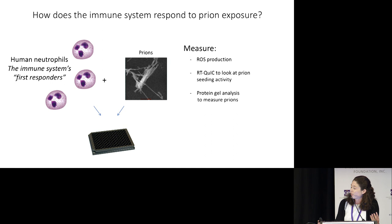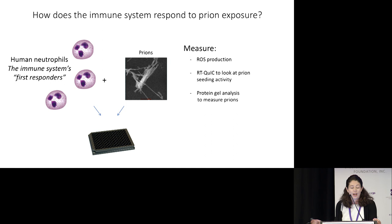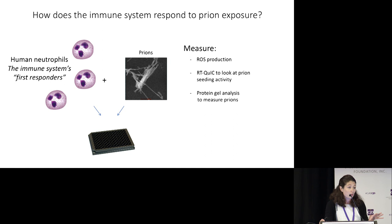To look at this, I took actual human neutrophils. We have donors on campus who donate a vial of blood, and we are able to separate out these immune cells — your body's first responders. I put those in a dish and added prions to ask: do these prions activate these immune cells? And when the cells are activated, they produce these natural disinfectants.